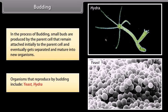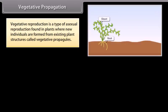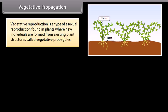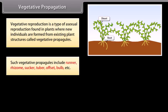The following diagram shows the bud developing on parent hydra. Vegetative reproduction is a type of asexual reproduction found in plants where new individuals are formed from existing plant structures called vegetative propagules. Such vegetative propagules include runner, rhizome, sucker, tuber, offset, bulb, etc.